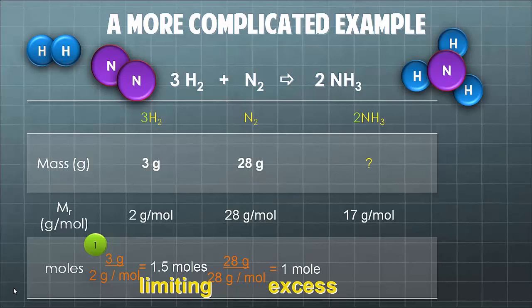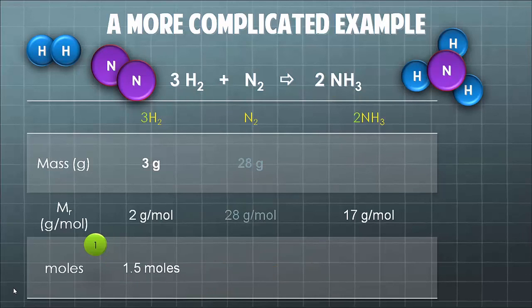So to simplify things, we're going to focus on the hydrogen and the ammonia and I'm going to make the nitrogen stuff a little bit paler. Now we've got our 1.5 moles of hydrogen. We've identified what is the limiting thing in this equation. We can look at our ratio between the hydrogen and the ammonia.